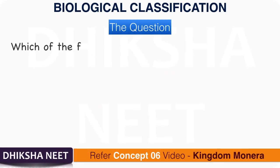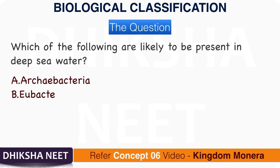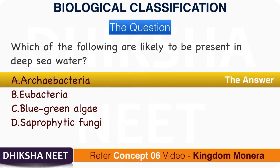Question 6: Which of the following are likely to be present in deep sea water? The answer is option A, Archaeobacteria.